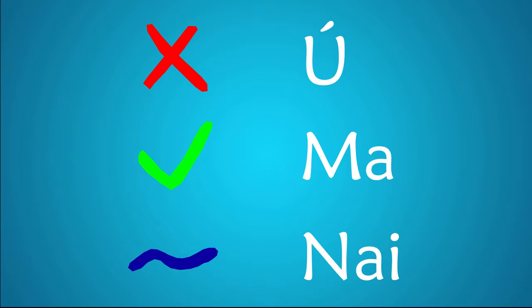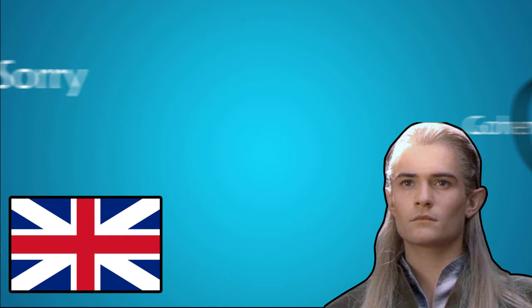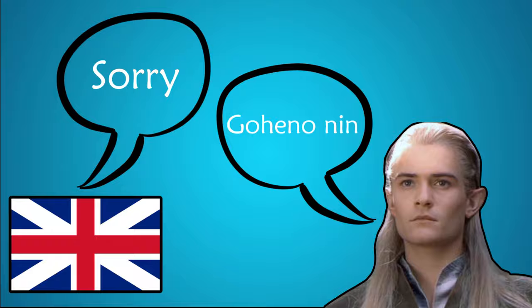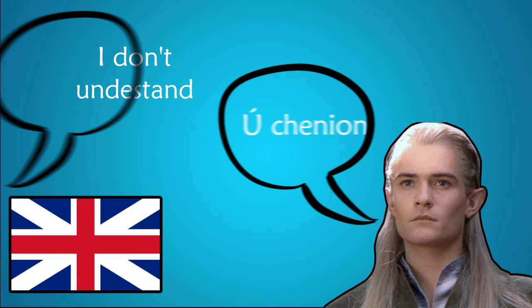If you proceed with the conversation in elvish and you don't understand something, you may say sorry, I don't understand. Sorry in Sindarin is 'Goheno ngin' — remember the pronoun 'ngin,' it means 'me' or 'my.' You can remember 'goheno' by imagining yourself going to get a henna tattoo with Legolas: 'Go for a henna tattoo, Legolas!' 'Goheno ngin, Legolas. U cheñion.' 'U cheñion' means 'I don't understand' — remember the 'u' means no, so 'I do not understand' is very easy to remember.